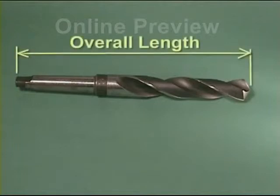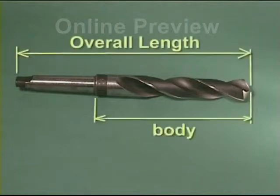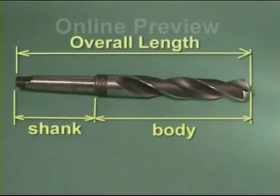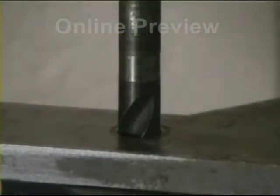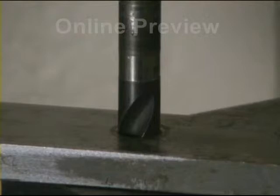We have an overall length, which is divided into the body of the drill and the shank portion. Within the body, there is the flute and the flute length. The flute allows the removal of the material being cut and gives a route to the point of the drill for cutting fluid. The length of the flute governs the maximum depth to which a drill may be used.